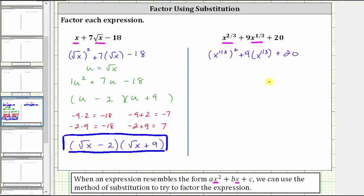Now we perform a substitution by letting u equal the variable factor of the middle term, which is x raised to the power of one-third. Let's write the expression in terms of u. Because x to the two-thirds is the square of x to the one-third, we can write the first term as u squared. Then we have plus nine times u plus 20. Now we factor this in terms of u.